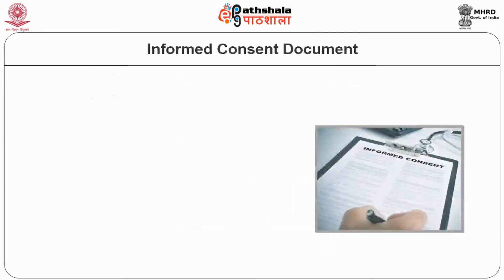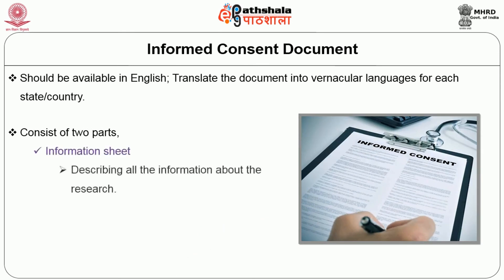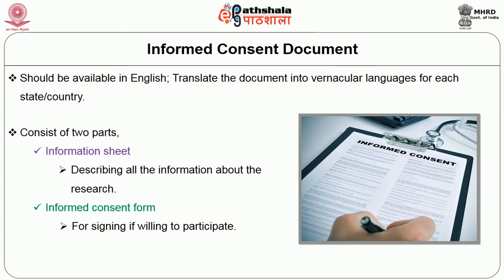The document should be available in English, but it has to be translated into local vernacular languages. For example, in an institution like All India Institute of Medical Sciences, New Delhi, where patients come from all over India, if there are 10 or 15 different languages, the informed consent is translated so that each patient can understand it in their own language. The document will have two parts: one is the information sheet which describes all the information, and the second is the consent form where the individual signs to indicate their willingness to participate.